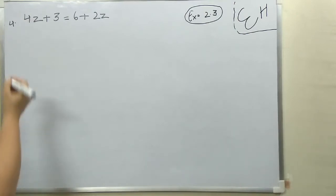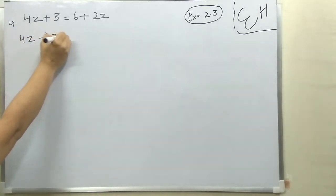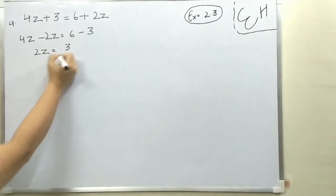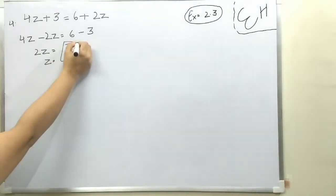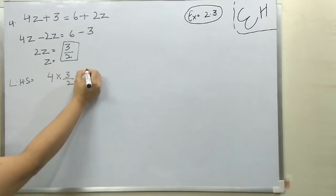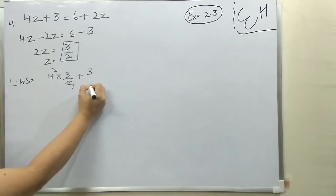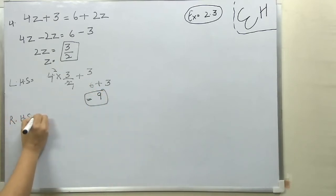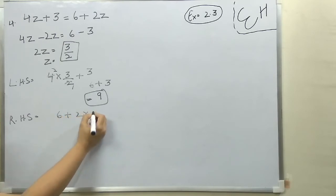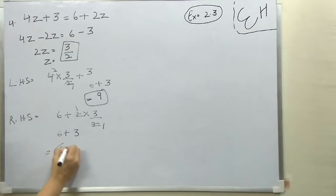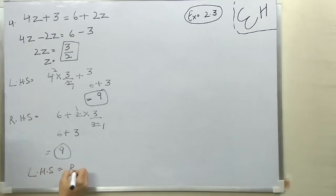4Z plus 3 is equal to 6 plus 2Z. We will bring 2Z here and take 3 there. 4Z minus 2Z is equal to 6 minus 3, so 2Z is equal to 3, giving Z is equal to 3 by 2. Now LHS: 4 into 3 by 2 plus 3 is 6 plus 3, which is 9. RHS: 6 plus 2 into 3 by 2 is 6 plus 3, which is 9. LHS is equal to RHS — your answer is correct.